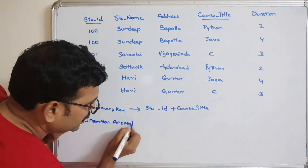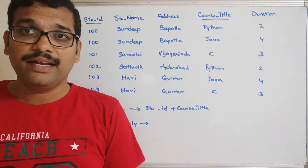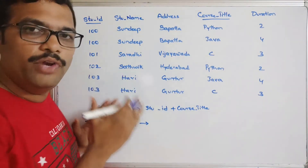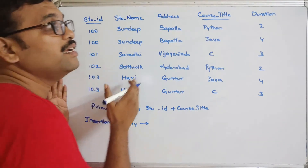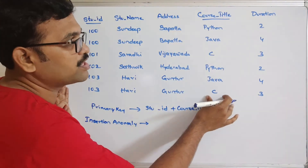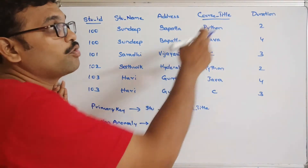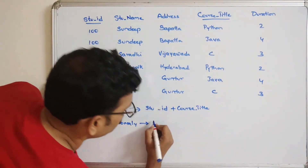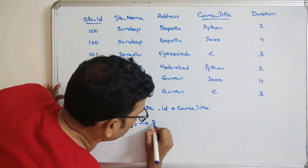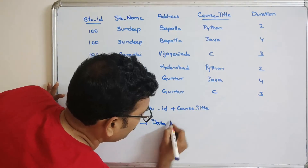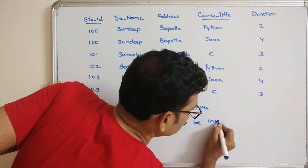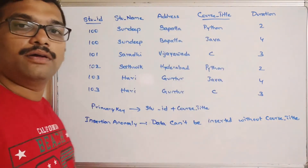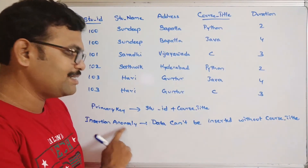Now, insertion anomaly: we can't insert data without the presence of other data. If a newly joined student hasn't enrolled in any course, we can't add their details to this table, because course title is also part of the primary key and cannot be kept null. That is called an insertion anomaly — data can't be inserted without a course title.